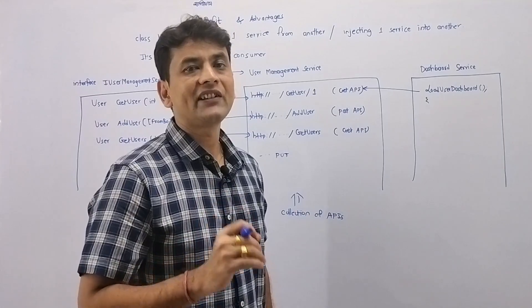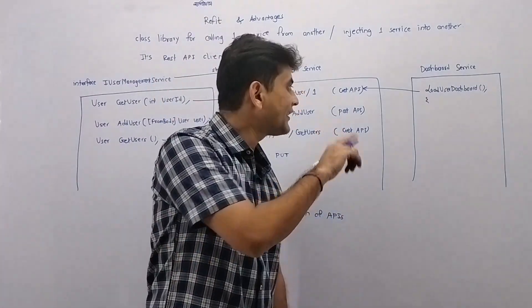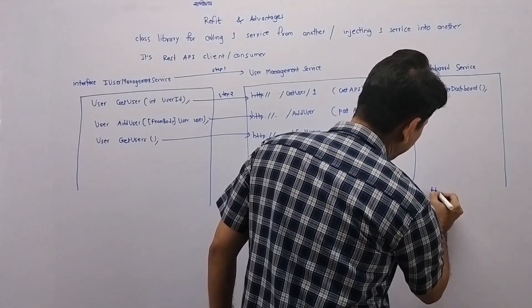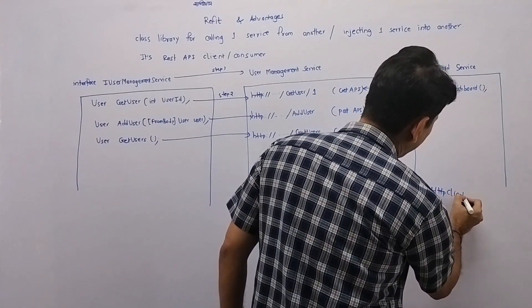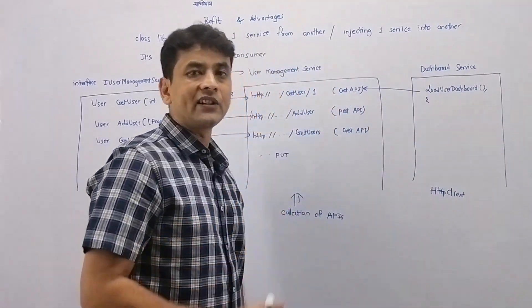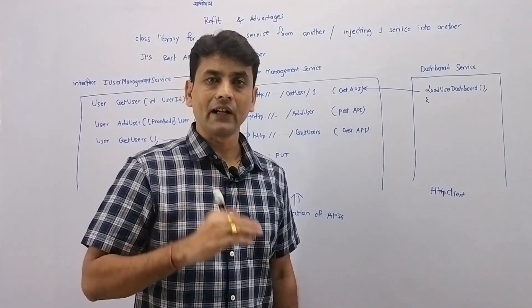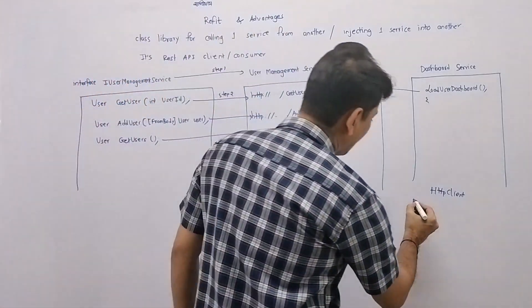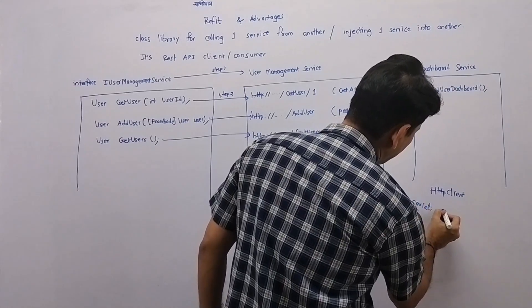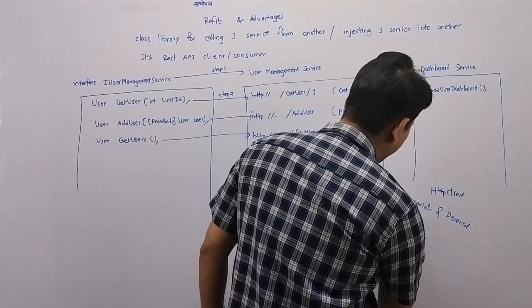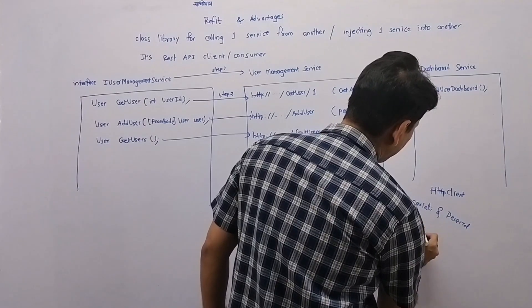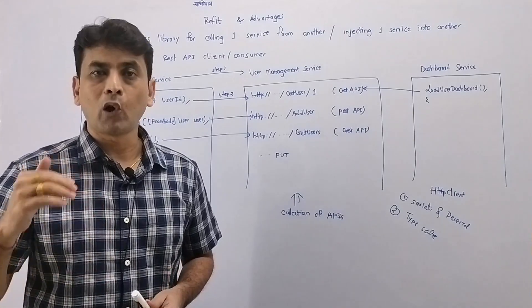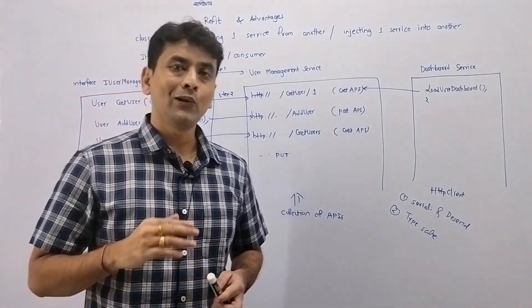Now let's discuss the advantages of using Refit. We can also call one service from another using HttpClient, but when using HttpClient we need to manage serialization and deserialization ourselves. With Refit, serialization and deserialization is handled automatically — that's the first advantage. The second advantage is that Refit is type-safe. When using Refit, it feels as if we are calling a normal C# instance method itself.